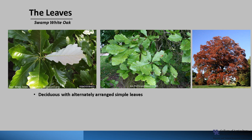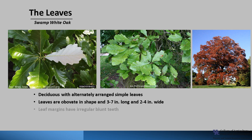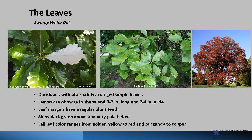Swamp White Oak is deciduous with alternately arranged simple leaves. The leaves are obovate in shape and three to seven inches long and two to four inches wide. The leaf margins have irregular blunt teeth. The leaves are shiny dark green above and very pale below. In fall, leaf color ranges from golden to yellow to burgundy to copper.